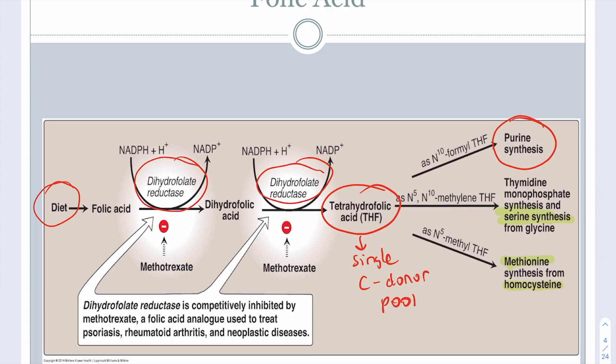A treatment for psoriasis, rheumatoid arthritis, and neoplastic diseases is methotrexate. Methotrexate blocks dihydrofolate reductase, which reduces the single-carbon pool of tetrahydrofolate and reduces purine synthesis. This prevents the immune cells in rheumatoid arthritis, neoplastic cells, and autoimmune cells in psoriasis from dividing — essentially stopping the replication of cells causing the disease.